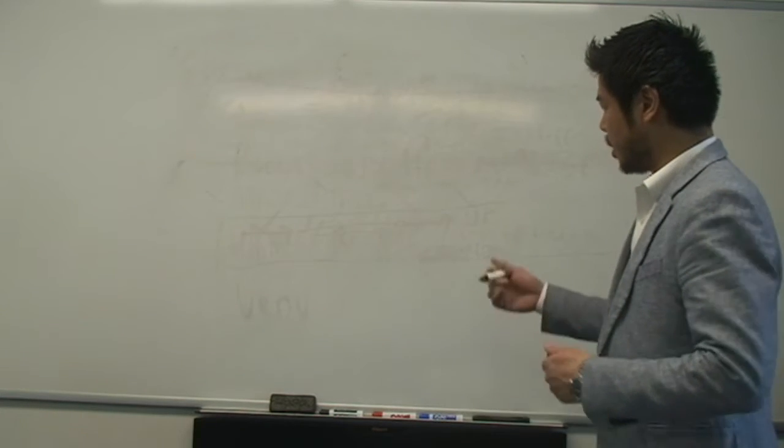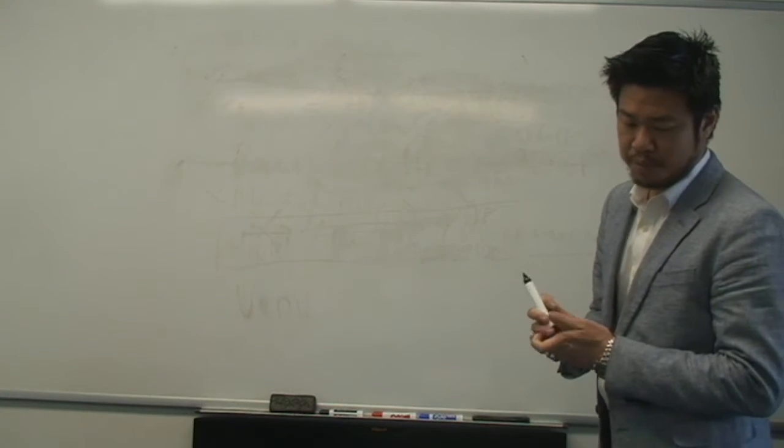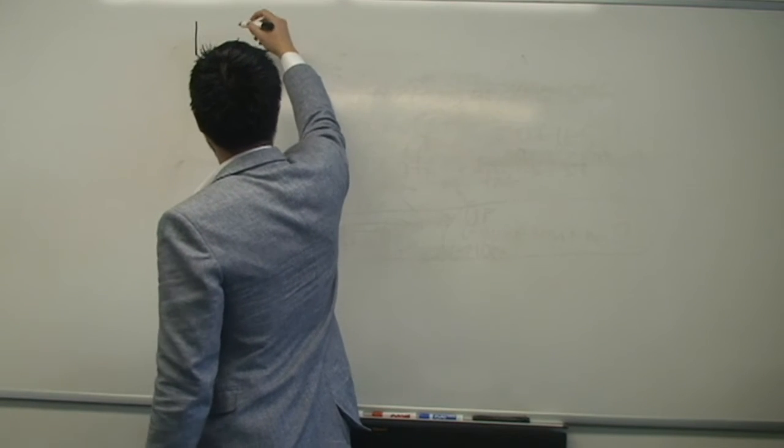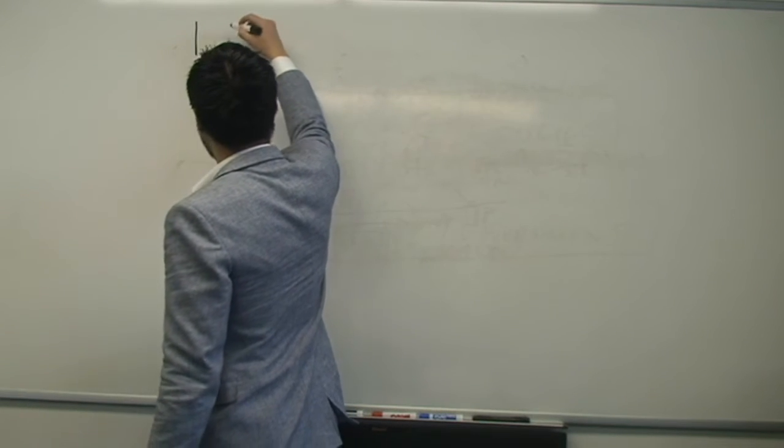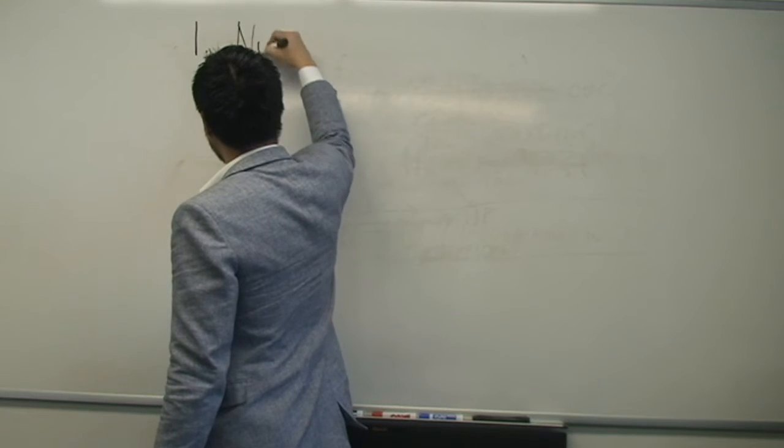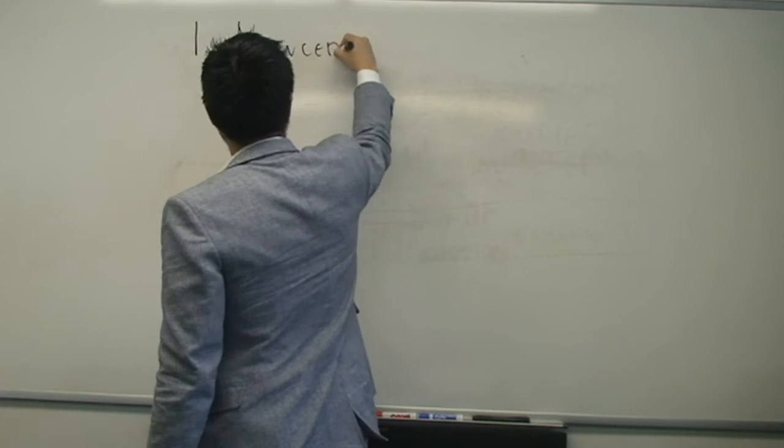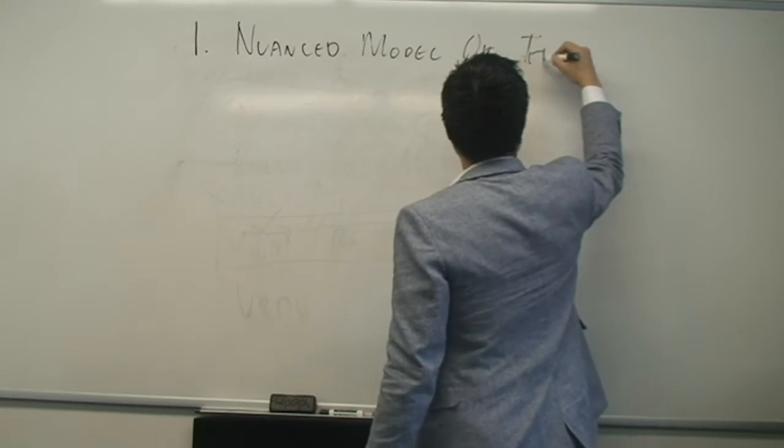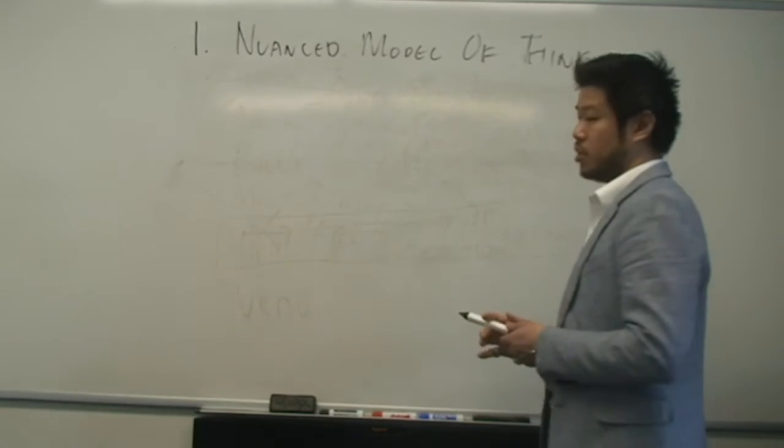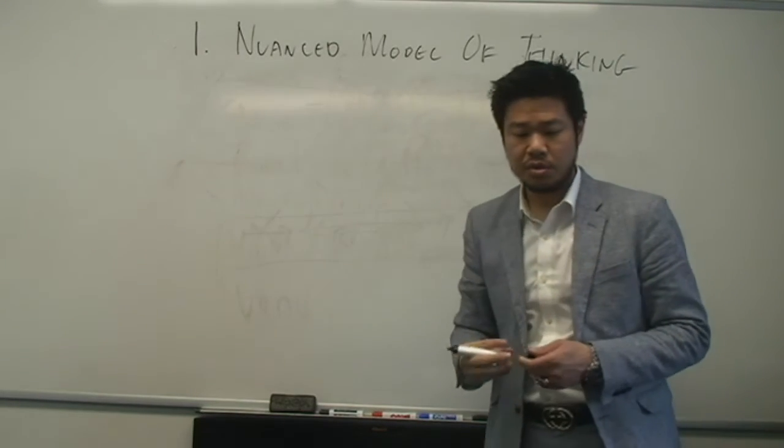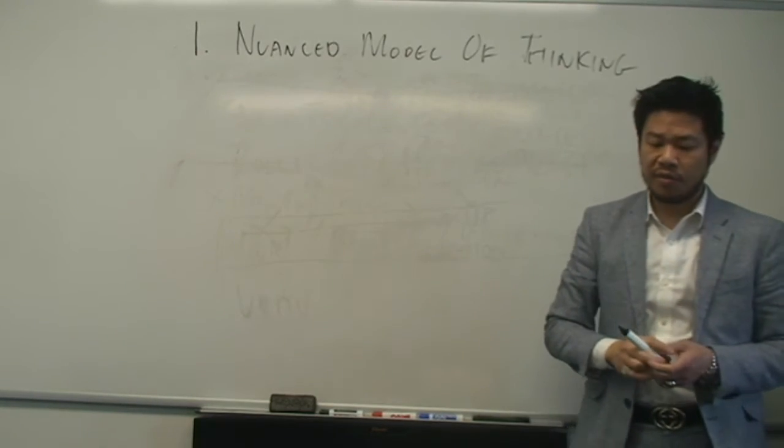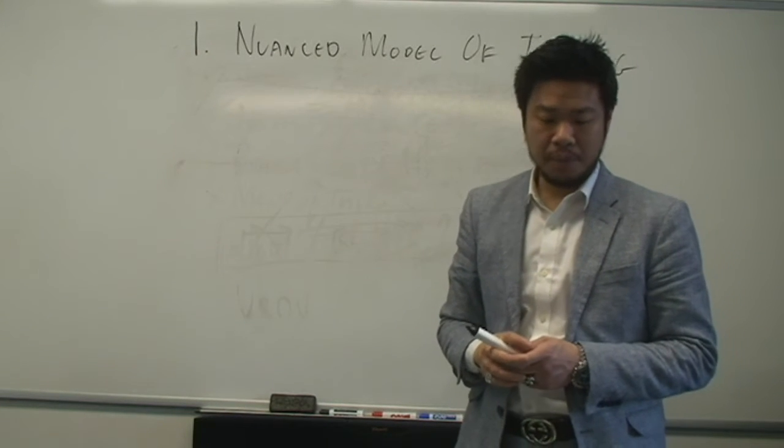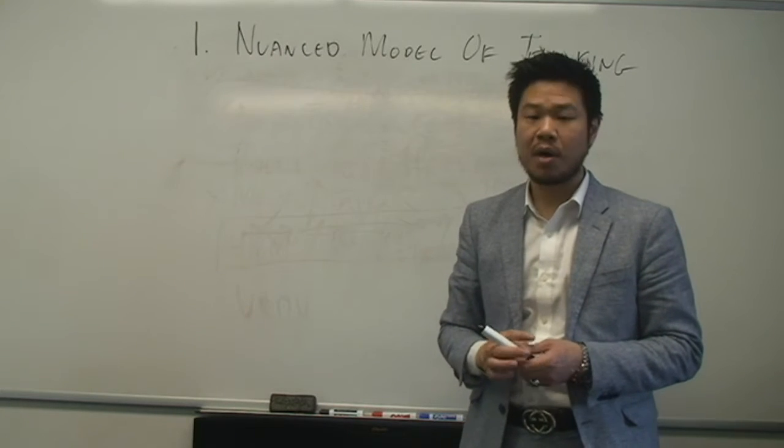There are only two real key points that I want to bring out and one is the way that Van Dyck synthesizes Raymond Williams and specifically this idea of the nuanced model of thinking. And that would be my challenge or proposition to you: ask yourself, am I a nuanced thinker? How nuanced is my model of thinking?